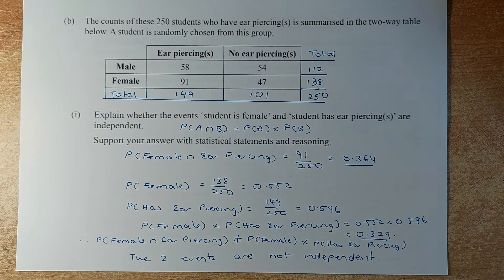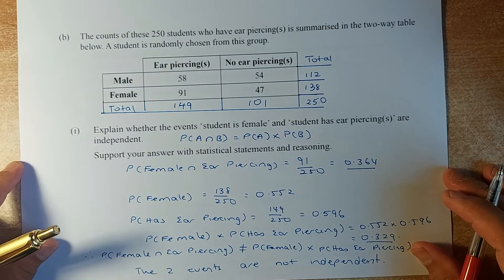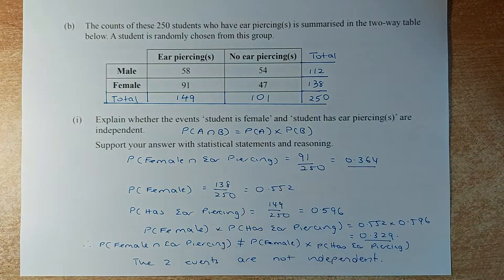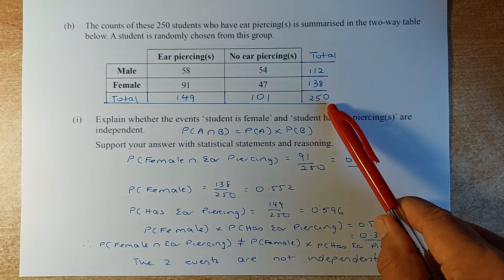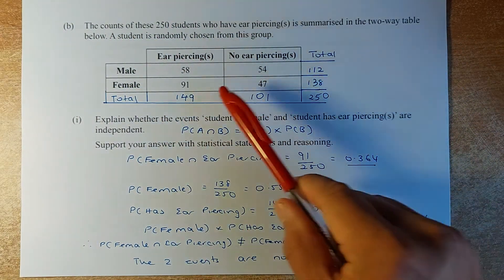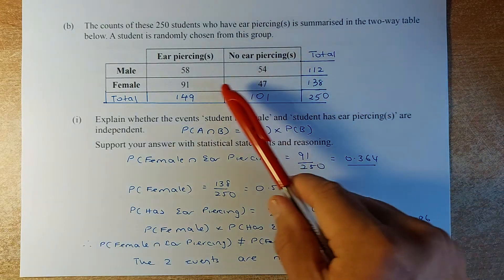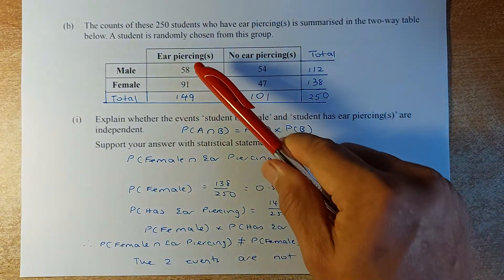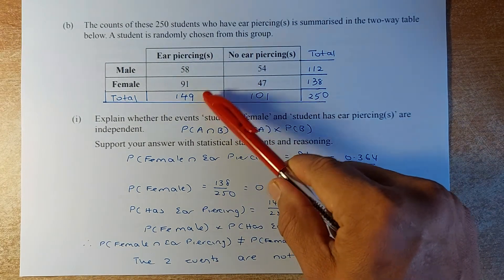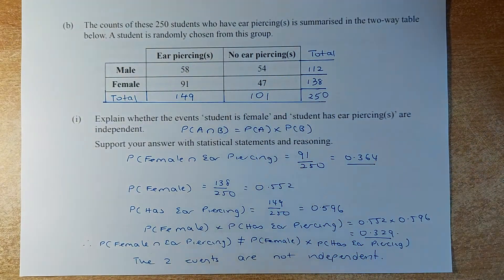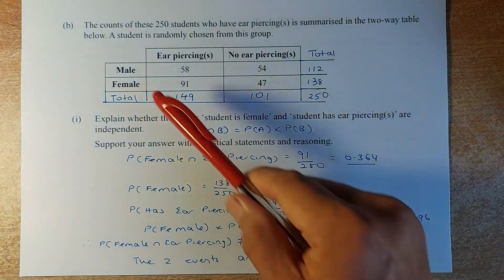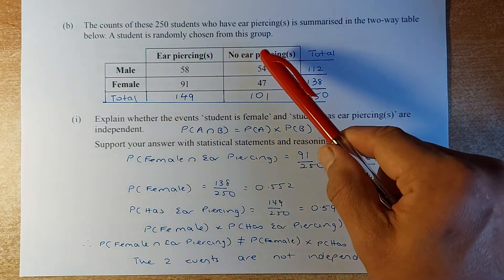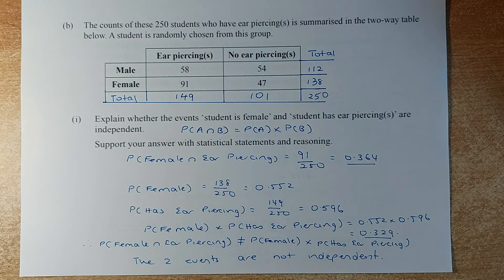The next question is based on a table again. There are a total of 250 students. We have added up the totals: the row totals and column totals are filled in. This time we are talking about male and female, and ear piercing versus no ear piercing, summarized in this table.